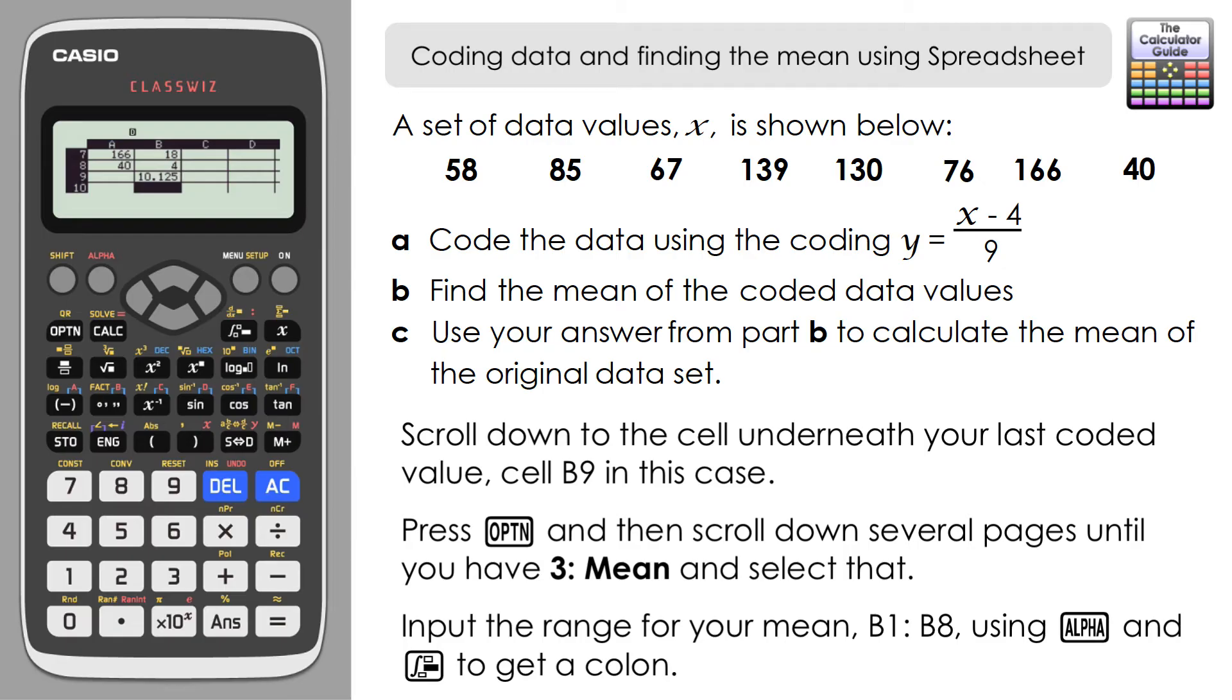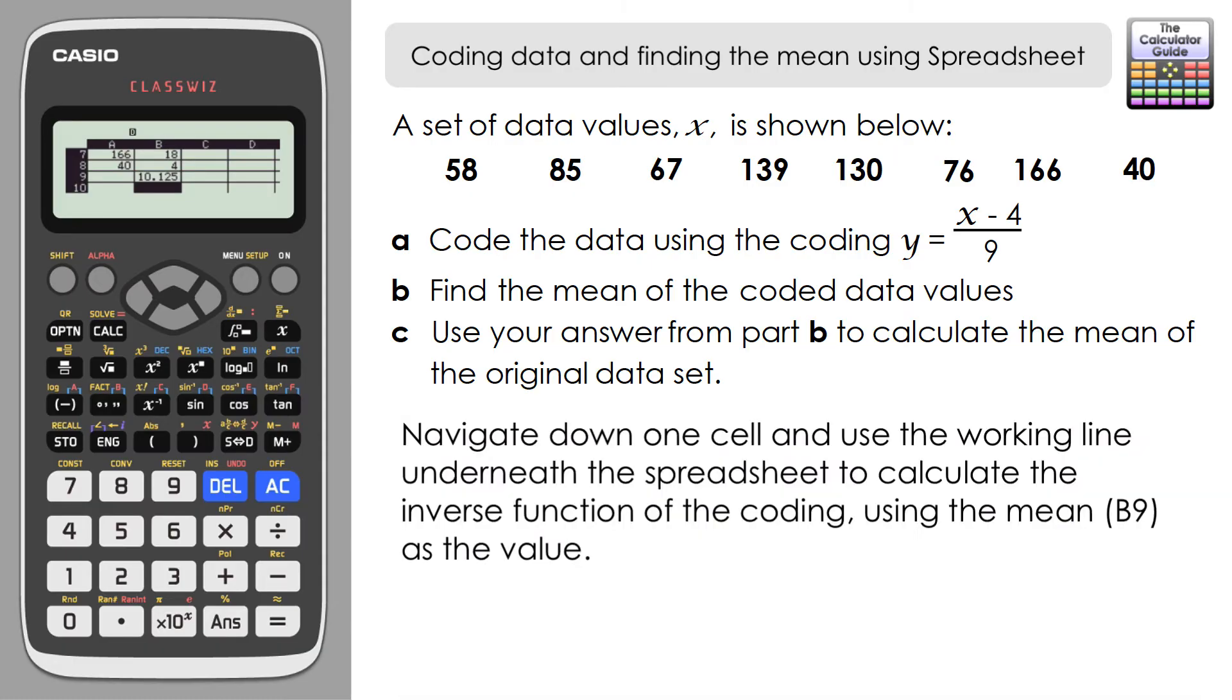Now the last part of the question, we need to calculate the mean of the original data. We're going to do this in two ways. First, I'm going to do what the question says, which is to use the answer from part B, 10.125, to find the mean of the original data. Then we're going to use the mean function from the calculator spreadsheet to find the mean of the original data, and they should be identical.